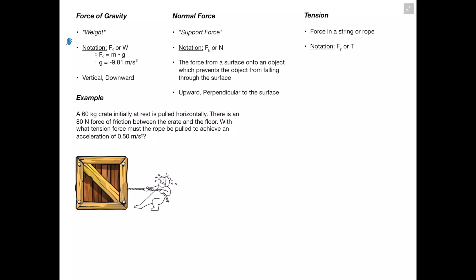Third, tension is the force in a string or rope (notation Ft or T). Here's an example: a 60 kg crate initially at rest is pulled horizontally. There is an 80 Newton force of friction between the crate and the floor. With what tension force must the rope be pulled to achieve an acceleration of 0.5 m/s²?